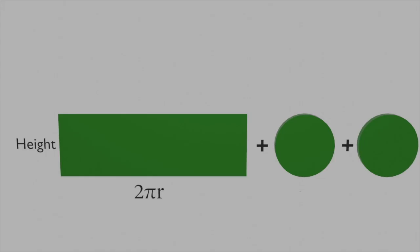The area of each circle is πr², where r is the radius of the cylinder. And the area of the rectangle is height times 2πr.